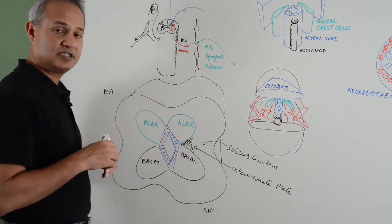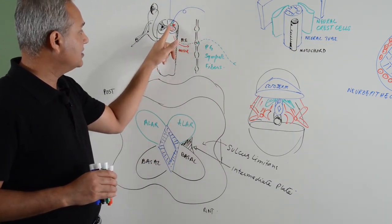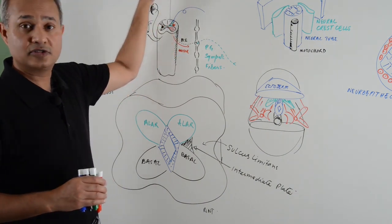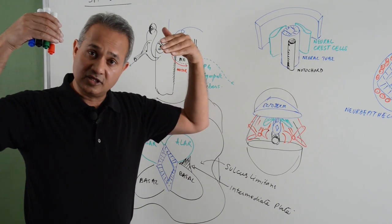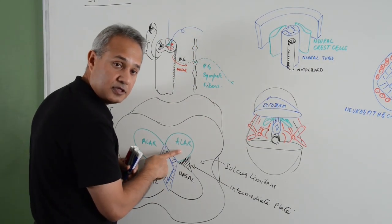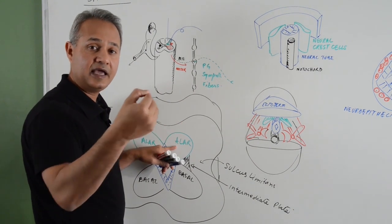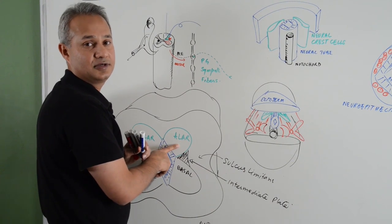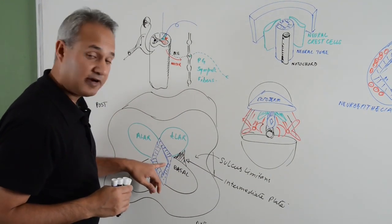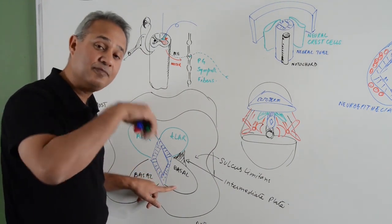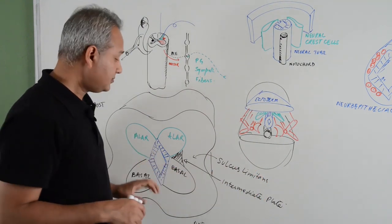Sensory fibers come into the spinal cord from outside. There is sensory gray matter, and then second-order neurons go up, or sometimes first-order neurons go up — like in the gracilis and cuneatus tracts — and relay in the medulla. The fibers here are not the ones coming in — the sensory nerve fibers coming into the spinal cord do not originate from the neural tube. They are going to come from outside.